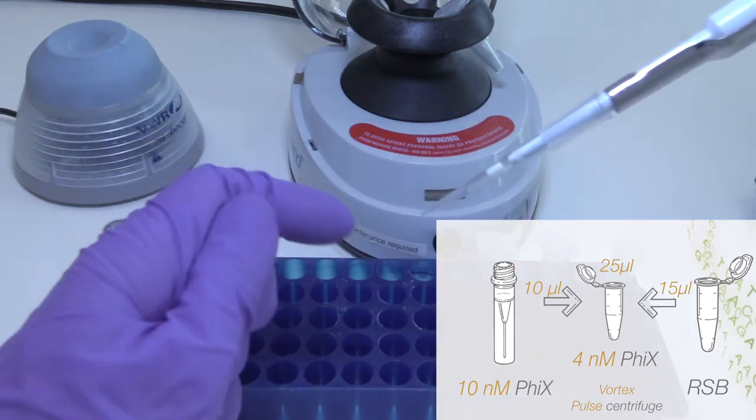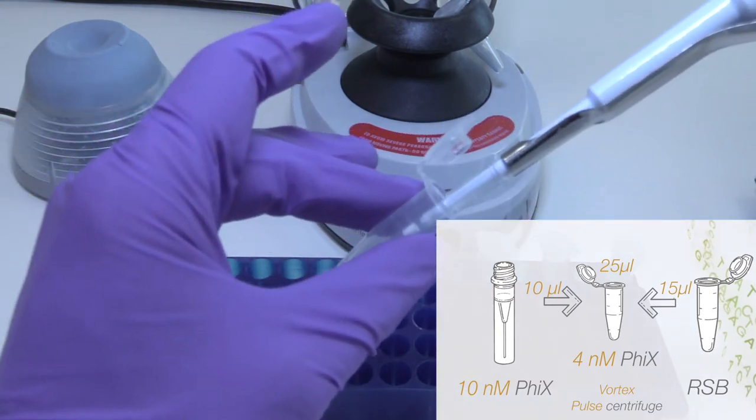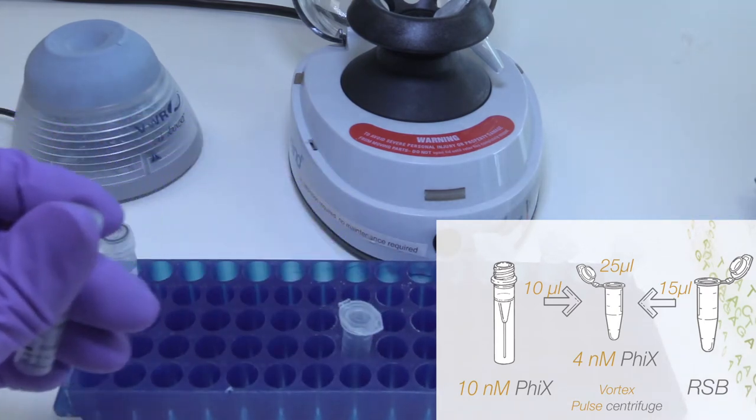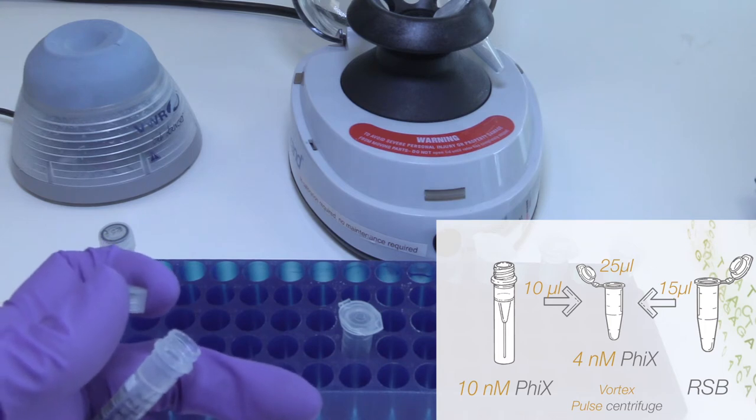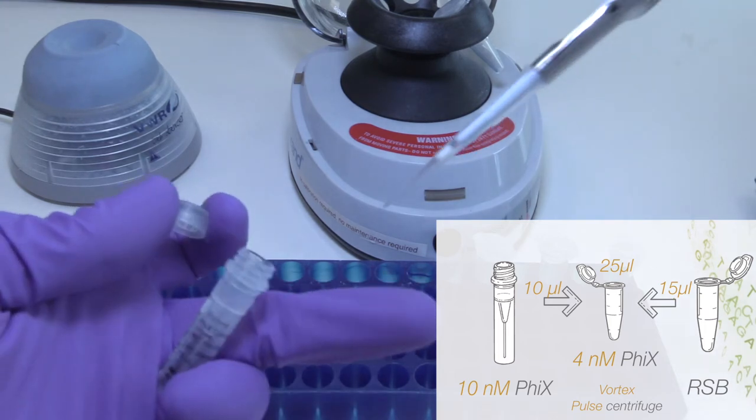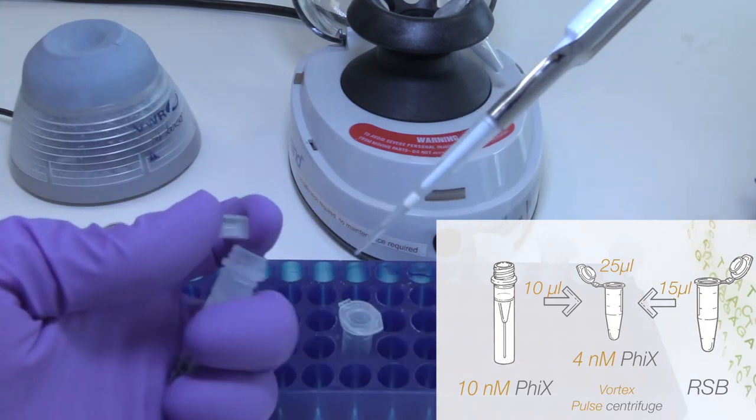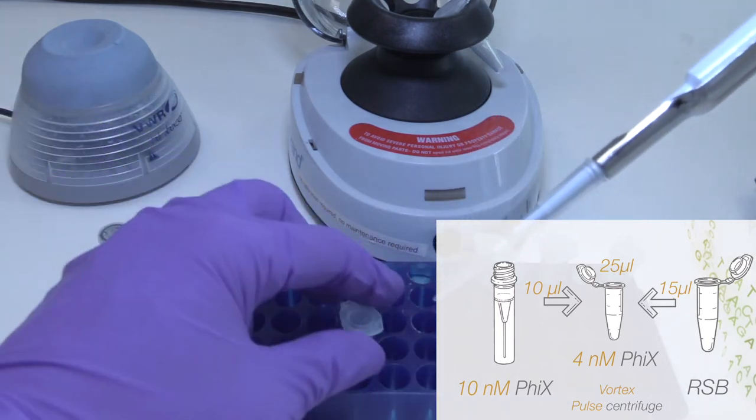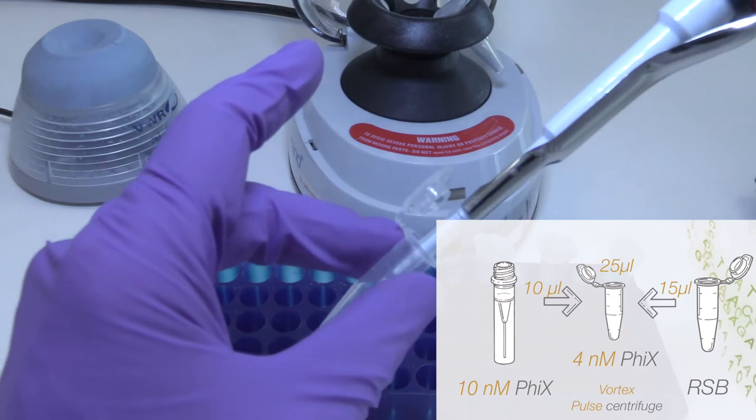Combine the following volumes in a microcentrifuge tube: 10 microliters of Phi-X at 10 nanomolar and 15 microliters of RSB. This will make a total Phi-X volume of 25 microliters at 4 nanomolar.